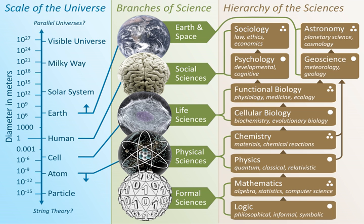Typically Earth scientists will use tools from physics, chemistry, biology, geography, chronology and mathematics to build a quantitative understanding of how the Earth system works, and how it evolved to its current state.